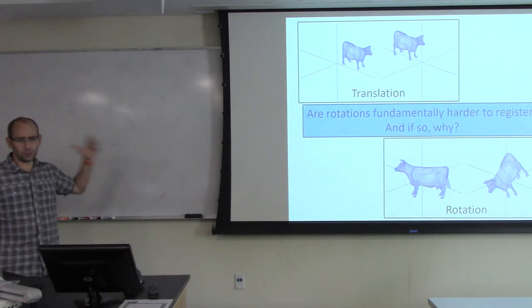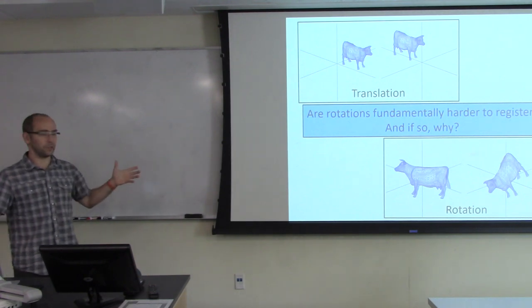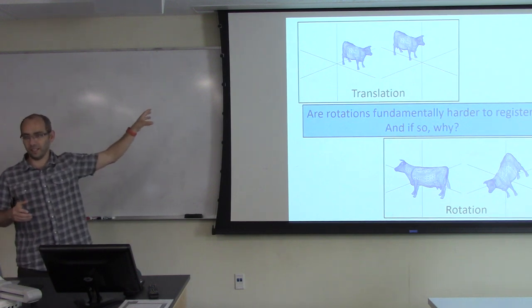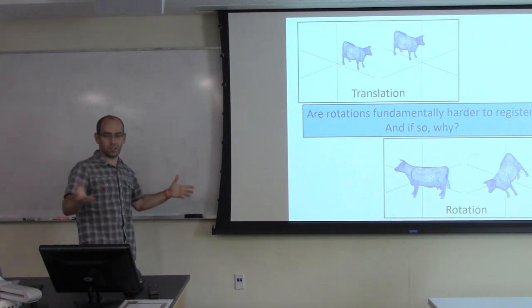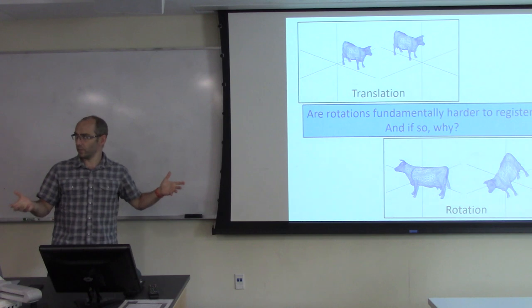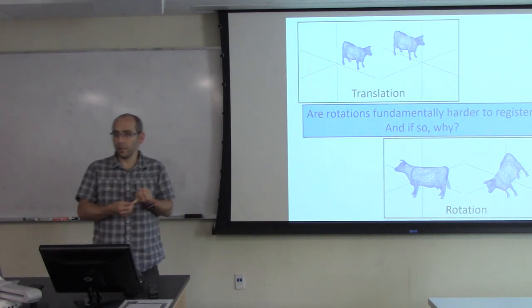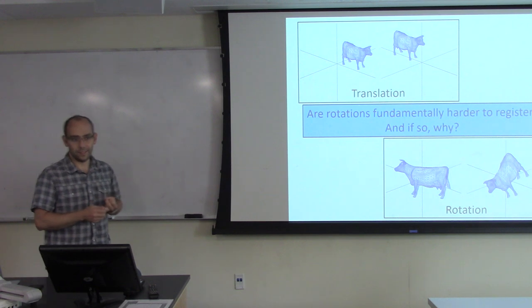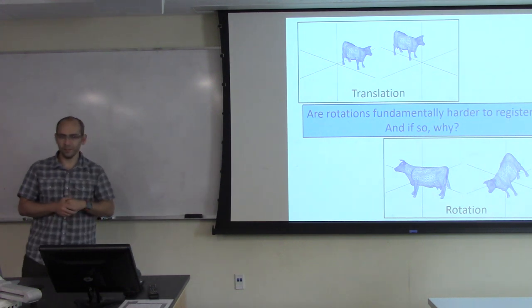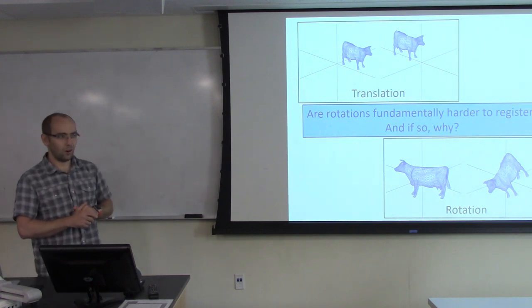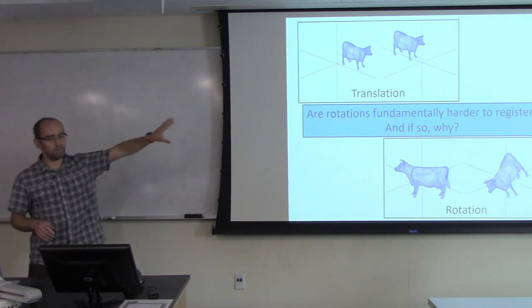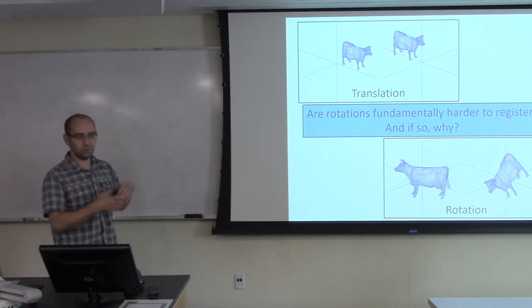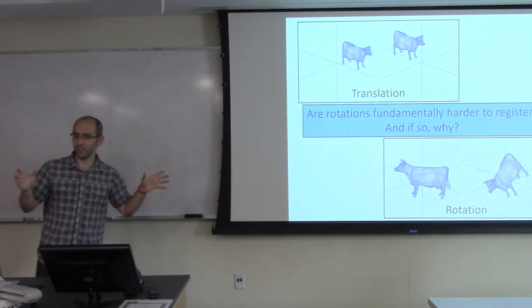This is a question we were thinking about even 20 years ago. It was clear translations are easy — in fact even easier than described, because you can take every shape and just translate it so its center of mass is at the origin. You don't even have to look at pairs of shapes; you can canonically pose things with respect to translation. Rotation is hard. So the questions are: is there something about rotations that makes it fundamentally harder than translations, and if so, why? We'll give a hint that rotations might be substantially harder. Even if you think it has to do with commutativity, the same issue holds for 2D curves instead of 3D surfaces — translation is trivial with center of mass, rotations are not.